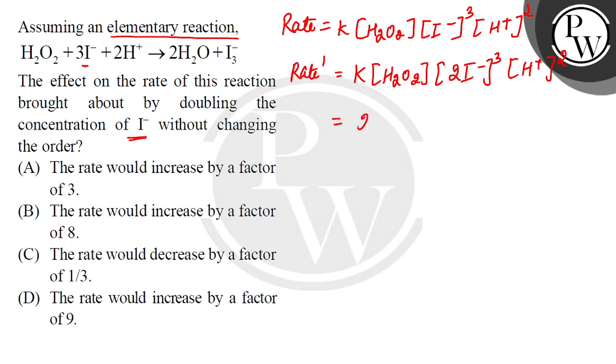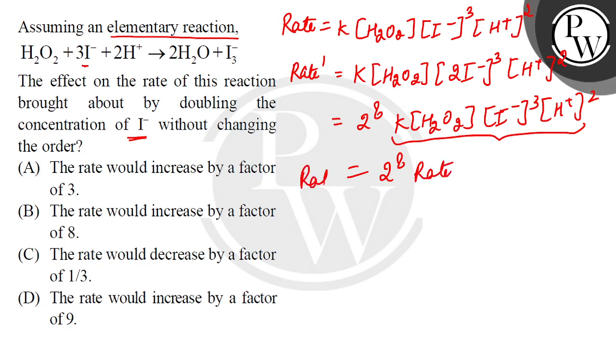So I can write this, 2 to power 3, K, H2O2, I negative cube, H positive square. Now what is this portion? What is this portion? Initial rate. It is the initial rate and what is this, is the new rate. So it is 2 to power 3, that is 8, then 2 to power 3.